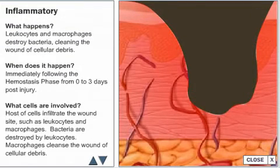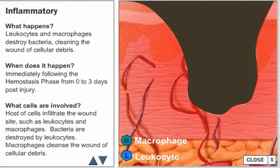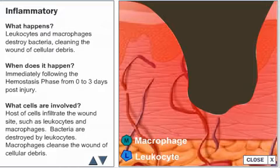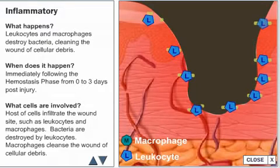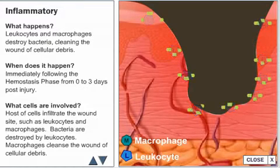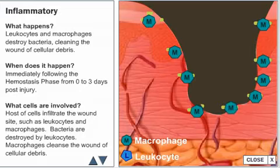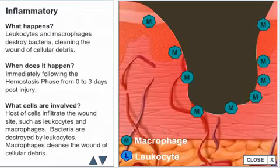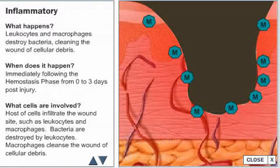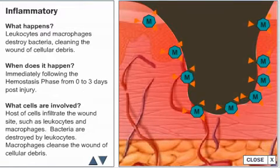The inflammatory phase is characterized by a host of cells — leukocytes and macrophages — infiltrating the wound sites. Bleeding is controlled by hemostasis. Any bacteria that is present is destroyed by leukocytes, particularly the polymorphonuclear neutrophils. About four days after the injury, macrophages work to destroy bacteria, cleansing the wound of cellular debris. Macrophages replace the leukocytes and produce a host of cytokines and growth factors that act as chemoattractants to other cells needed for tissue repair.